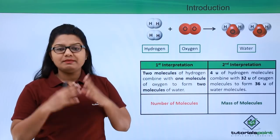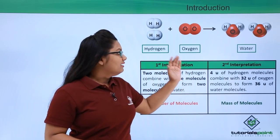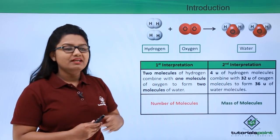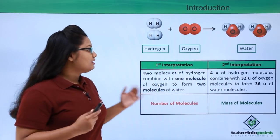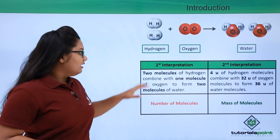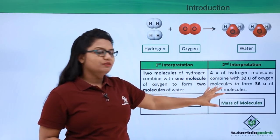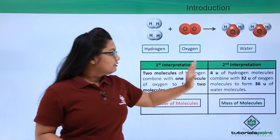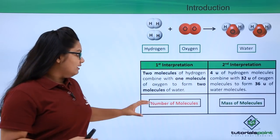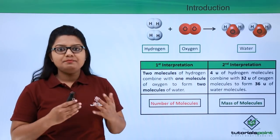If we ask this same question to somebody else, he or she may answer in a completely different manner. For example, he may answer: four U of hydrogen molecules combined with 32 U of oxygen molecules to give out 36 U of water molecules. In the first interpretation, the number of molecules were considered, and in the second interpretation, the mass of the molecules were considered.